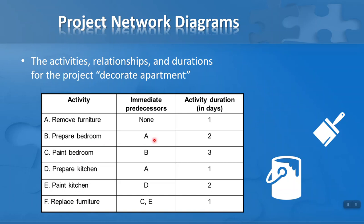Activity B, prepare bedroom, can only start when the furniture is removed, so it's dependent on activity A. Activity C, paint bedroom, can only start when preparation is complete, so it depends on activity B — I only list the immediate predecessor. Prepare kitchen also depends on removing furniture, so its immediate predecessor is A. Paint kitchen depends on prepare kitchen, so its immediate predecessor is D. Finally, replace furniture can only happen when both the bedroom and kitchen are painted — activities C and E respectively. The durations in days are: remove furniture one day, prepare bedroom two days, and so on.